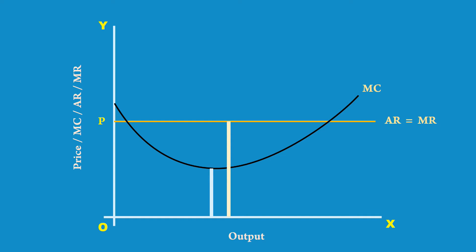Vertical distance between X axis and the marginal revenue curve shows the marginal revenue earned by the producer. Up to M1 output, marginal cost is higher than marginal revenue.